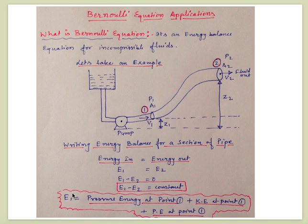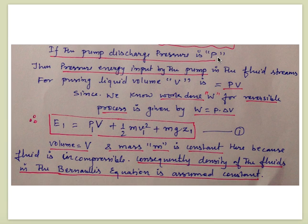The total energy E1 at point 1 consists of three components: pressure energy provided by the pump, kinetic energy due to fluid velocity, and potential energy due to elevation Z1. If the pump discharge pressure is P, the pressure energy input for pushing liquid volume V is P times V, since work done is P times delta V, and work done is a form of energy.